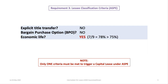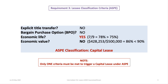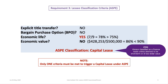Third is the economic life test: the seven-year lease term divided by the nine-year useful life equals 78%, which exceeds the 75% benchmark — so this criteria is met, and the lease is classified as a capital lease. Fourth is the economic value test: $428,253 divided by $500,000 fair value equals 86%, which is less than the 90% benchmark, so this criteria is not met. Under IFRS, all leases are finance leases unless short-term or of low dollar value — neither applies here, so it would be classified as a finance lease.